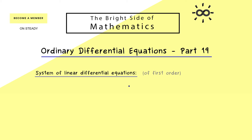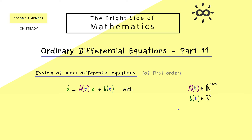Without loss of generality, we can discuss first order systems. This means we have a whole vector x, but only the first derivative of this one goes into the equation. We say that this ODE is linear if we can write it with a matrix function and a vector function: A of t times x plus b of t, where A of t is always an n times n matrix and b of t is always an n-dimensional vector. Hence the whole thing is an n-dimensional system.